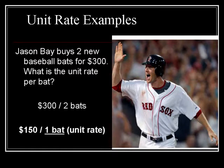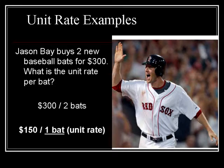Here's a basic unit rate problem. Let's say Jason Bay decides to buy 2 new baseball bats for $300. What is the unit rate per bat? The first thing you do is make a ratio: $300 in the numerator and 2 bats in the denominator. When that fraction is simplified, the price is $150 for 1 bat. Since the denominator is 1, it's a unit rate — every bat costs $150.